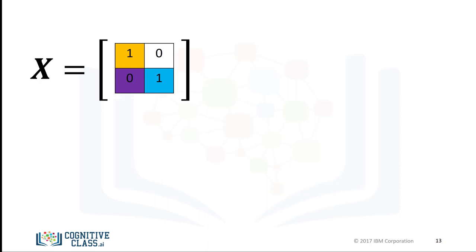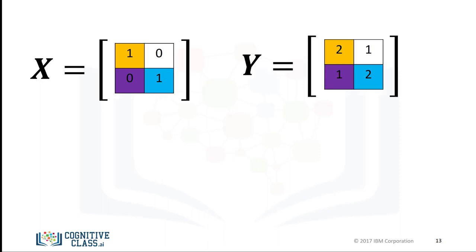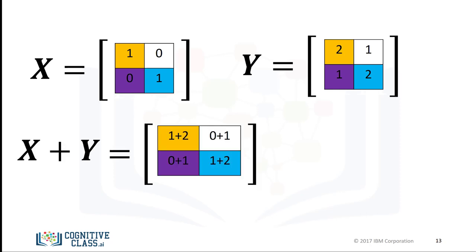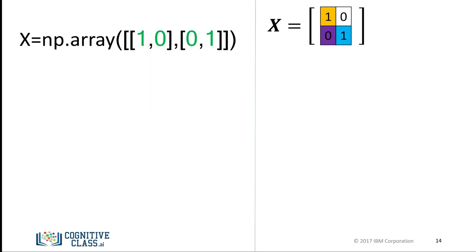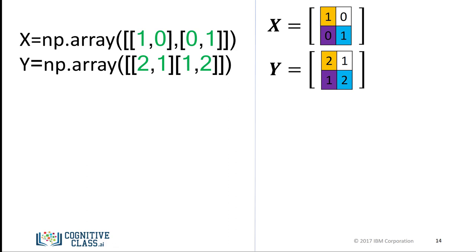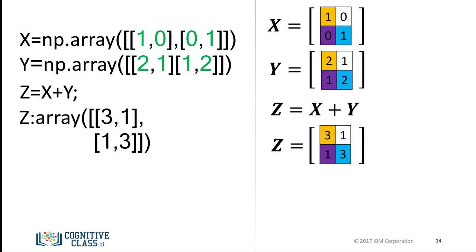We can also add arrays. We can add the matrices, which corresponds to adding the elements in the same position — adding elements contained in the same color boxes together. The result is a new matrix that is the same size as matrix x or y. Each element in this new matrix is the sum of the corresponding elements in x and y. To add two arrays in NumPy, we define array x, then we define the second array y, and we add the arrays. The result is identical to matrix addition.